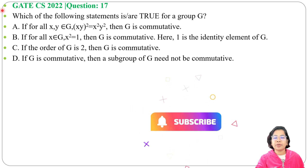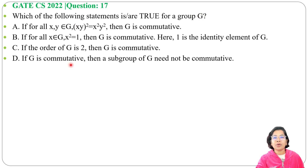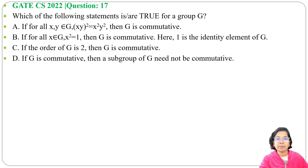Let's solve a previous question from Group Theory. This question was asked in GATE 2022, question number 17: which of the following statements are true for a group G? Four options are given. Let's check them one by one.